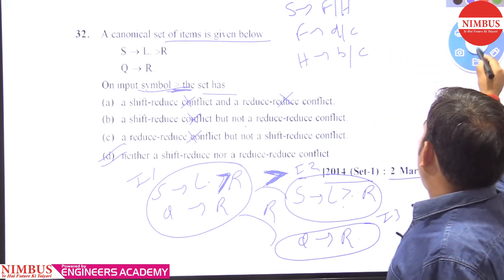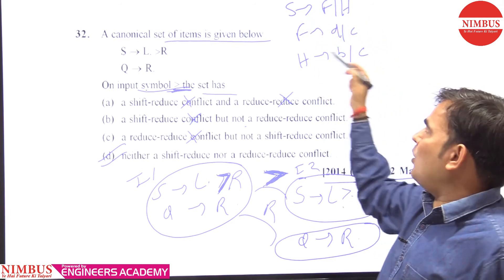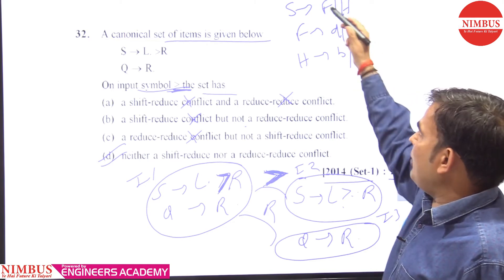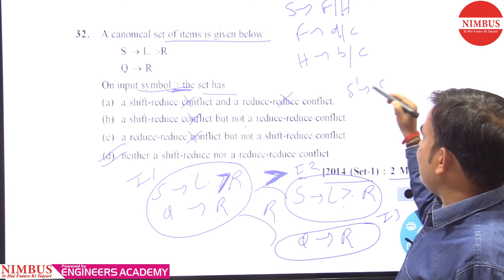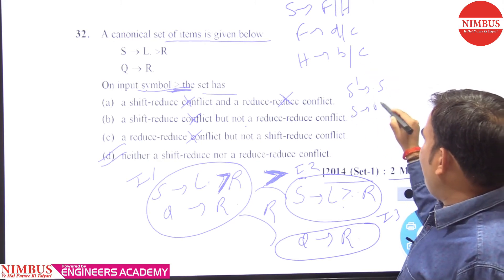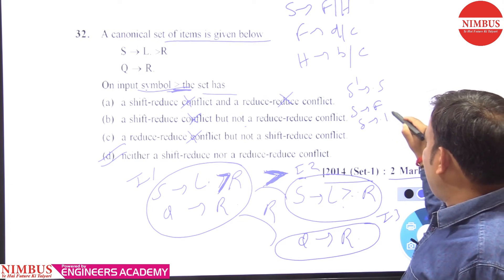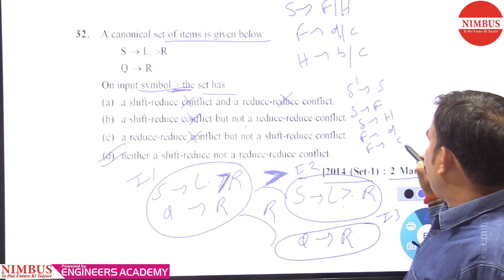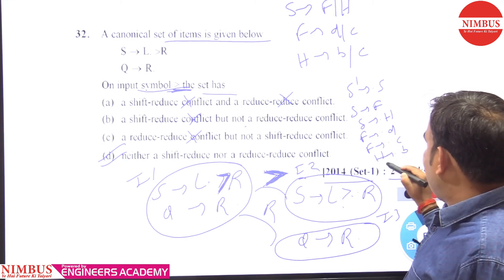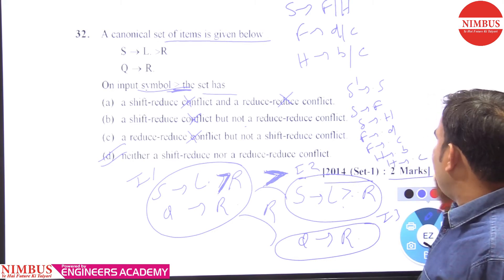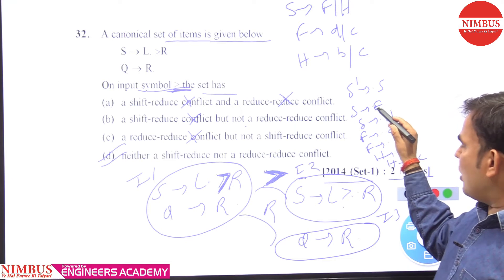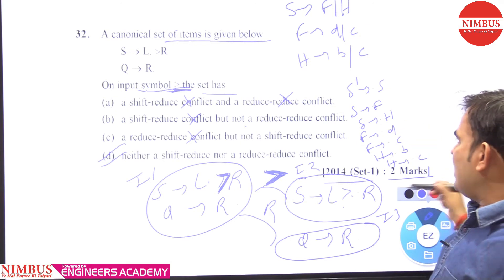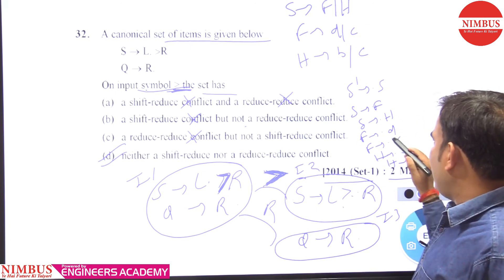What will happen when we find out the LR(0) items or canonical set of items? The i0 state: we first make the augmented grammar — S' tends to dot S. Then S tends to dot f, S tends to dot h, F tends to dot d, F tends to dot c, S tends to dot b, and S tends to dot c. When dot encounters any non-terminal, we write all productions from the grammar into that state.